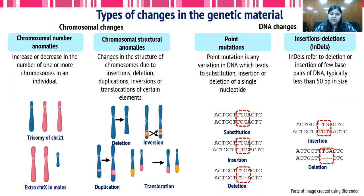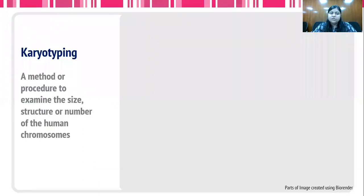There are different techniques to identify or detect different types of changes that occur in the genetic material. First, we will talk about karyotyping, which is a method to determine aberrations at the chromosome level — that is, the microscopic level.